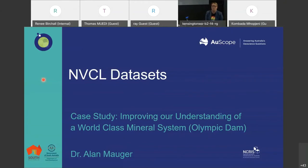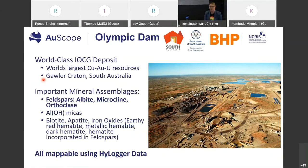That was an example of using three drill holes in a relatively underexplored area to understand stratigraphy and mineral system potential. Now we jump to the exact opposite: Olympic Dam. Disclaimer — this is the work of Dr. Alan Mauger, formerly of GSSA, now retired, and it has been part of the NVCL project. Olympic Dam is a world-class IOCG deposit — the world's largest copper-gold-uranium resource — in the Gawler Craton, South Australia. The deposit has several important mineral assemblages associated with mineralization, including feldspars, ALOH micas, biotite, apatite, and iron oxides, all mappable using HiLogger data.